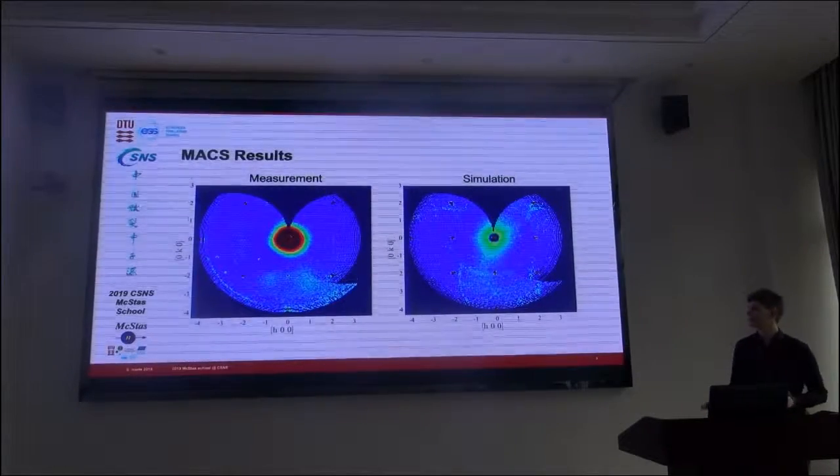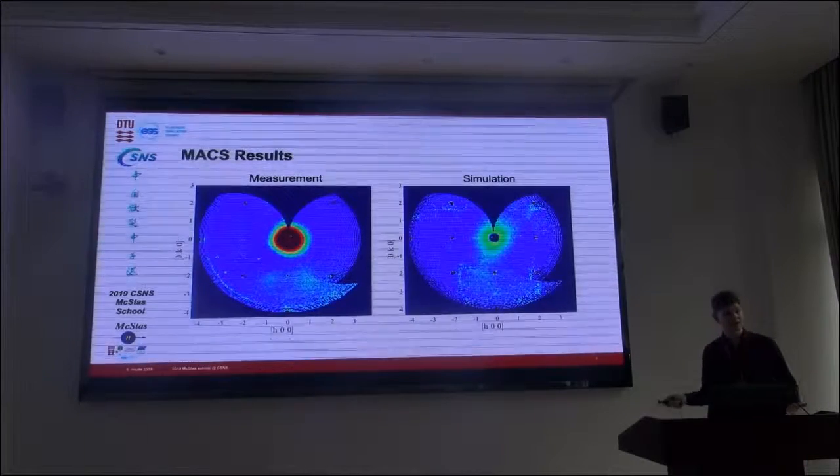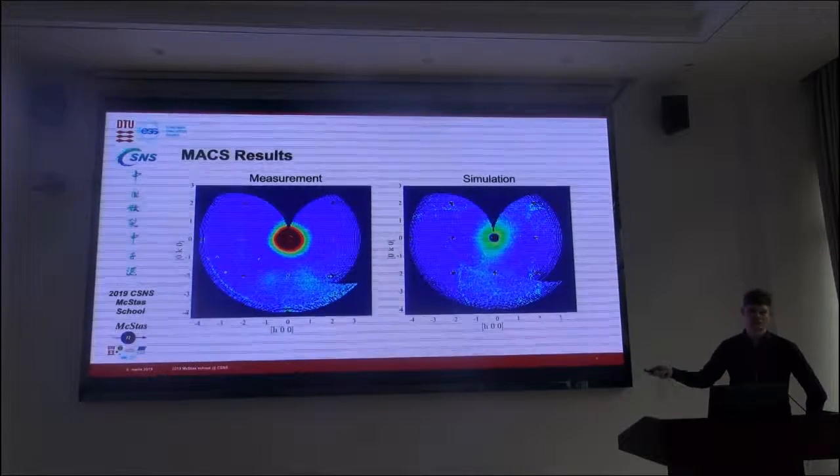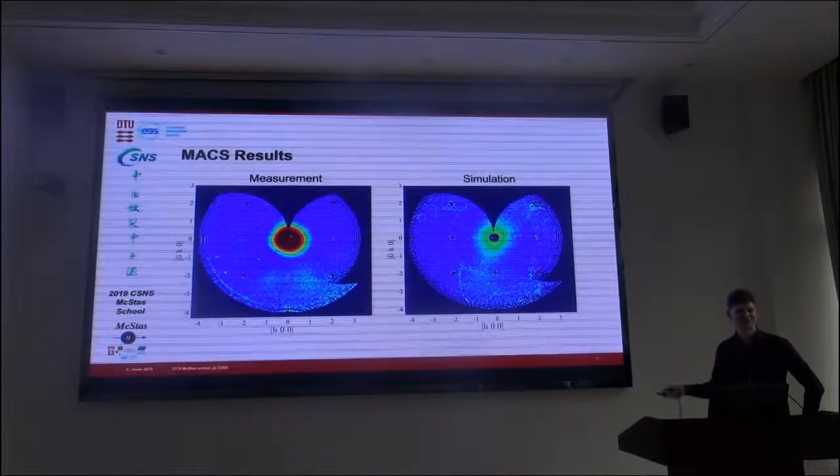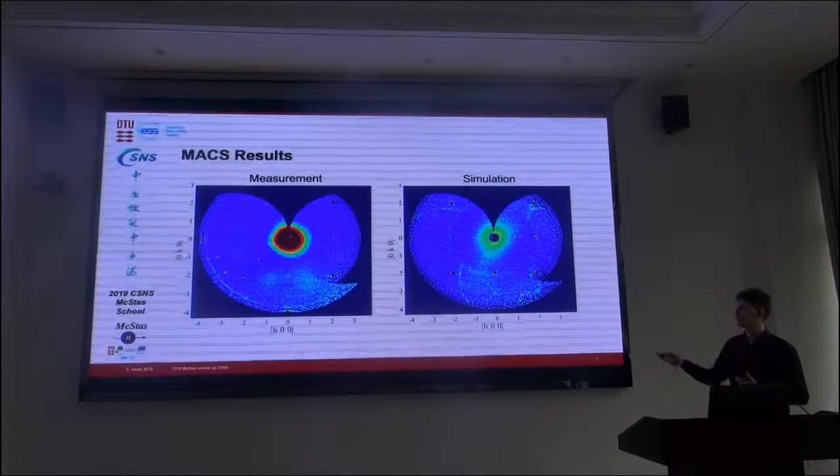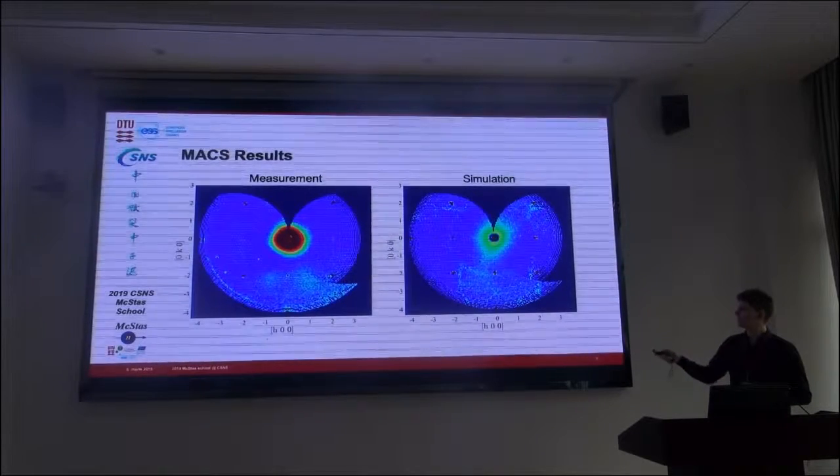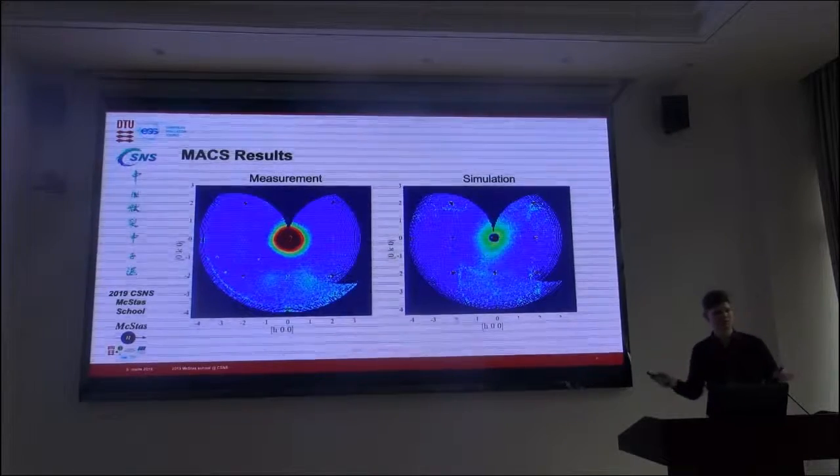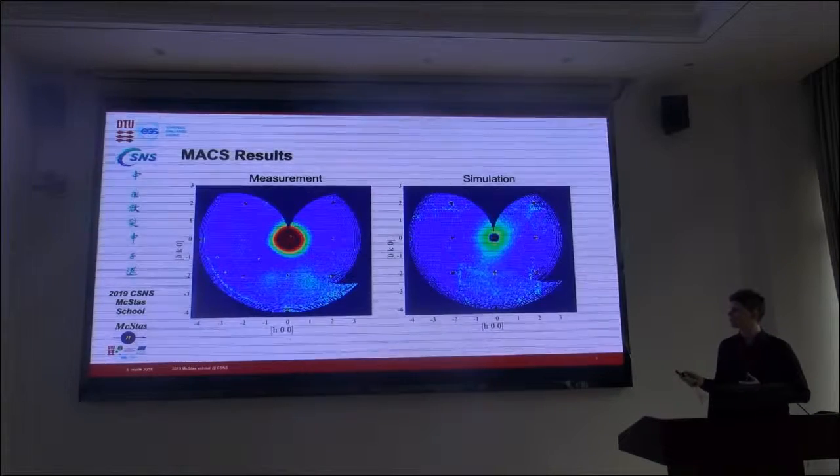Here is an example of measured data and simulated data on the instrument. It is a scanning instrument, so this is more than a thousand configurations. I cheated and made only 500 simulations of my instrument but still covered the same area, so there is a little worse resolution. But we still get the Bragg peaks, and these are actually multiple scattering Bragg peaks that they weren't expecting when they did the experiment first. But luckily they are also in the simulation.